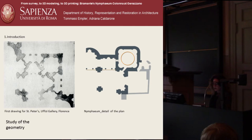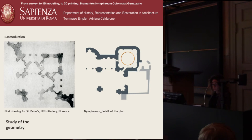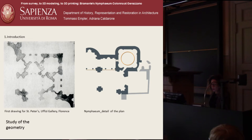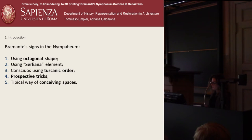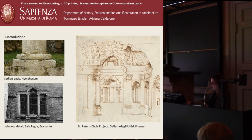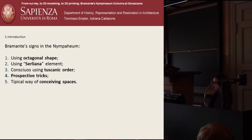In the design of St. Peter, you may notice a new way of conceiving space, and in particular the relationships between gaps and structure. Both in St. Peter and in the central part of the Nymfeo, the gaps become the main elements of the project. So, the Bramante signs in the Nymfeo are the use of octagonal shape, Serliana elements — which we can see here in the tutorial of St. Peter — the conscious use of the Tuscan order, perspective tricks, and a typical way of conceiving space.